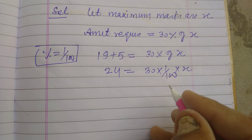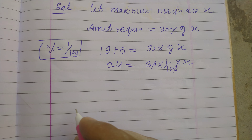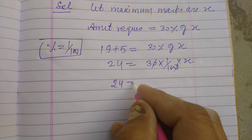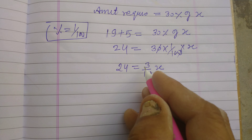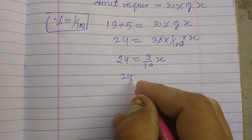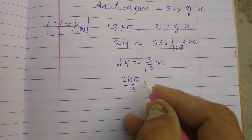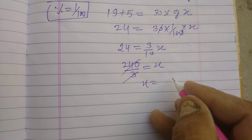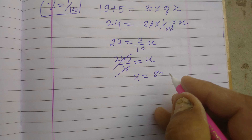Cross multiply into x, and the zero cancels. So 24 equals 3 upon 10 into x. On cross multiplication we get x equals 240 upon 3. Since 3 goes into 24 eight times, x equals 80.